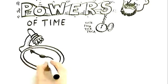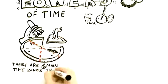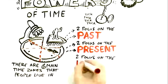So what we have discovered in 30 years of research, there's six main time zones that people live in. Two focused on the past, two on the present, and two on the future.